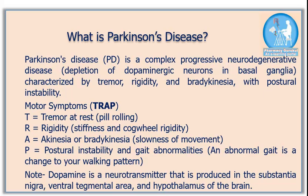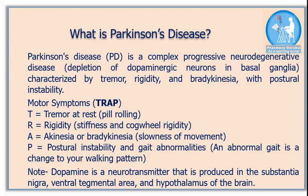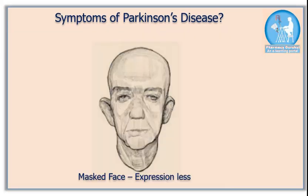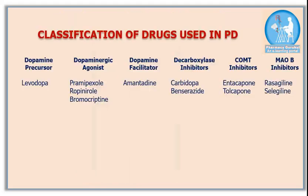The main motor symptoms of Parkinson's disease can be remembered as TRAP: T for Tremor, R for Rigidity, A for Akinesia or Bradykinesia, and P for Postural instability. All motor and non-motor symptoms are shown on screen — you can note them down or take a screenshot. Another important symptom is mask-like face, meaning a face without any expression.